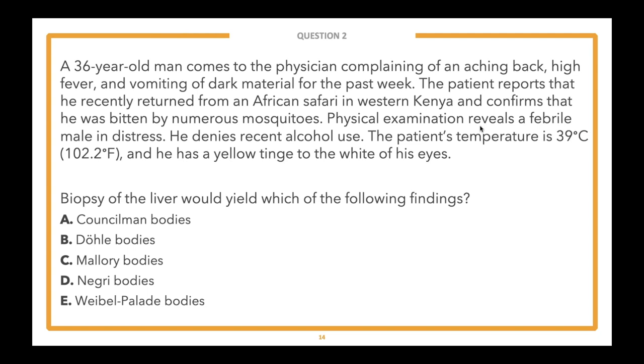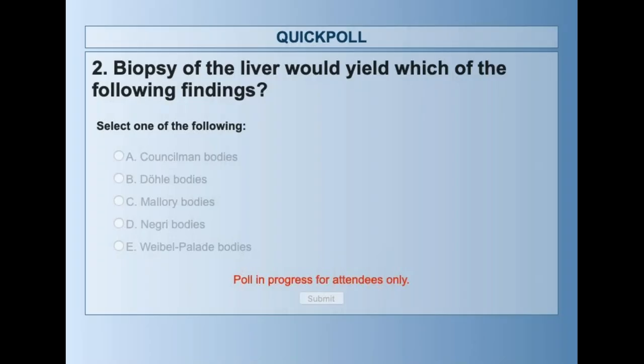Starting from the bottom with the answer choices: E — Wabel-Pilati bodies. D — Negri bodies. C — Mallory bodies. B — Dole bodies. And A — Councilman bodies. We'll give everyone a couple of seconds to gather your thoughts and select the answer you think is correct.